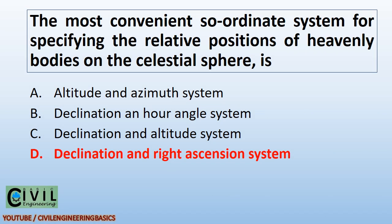The most convenient coordinate system for specifying the relative positions of heavenly bodies on the celestial sphere is declination and right ascension system.